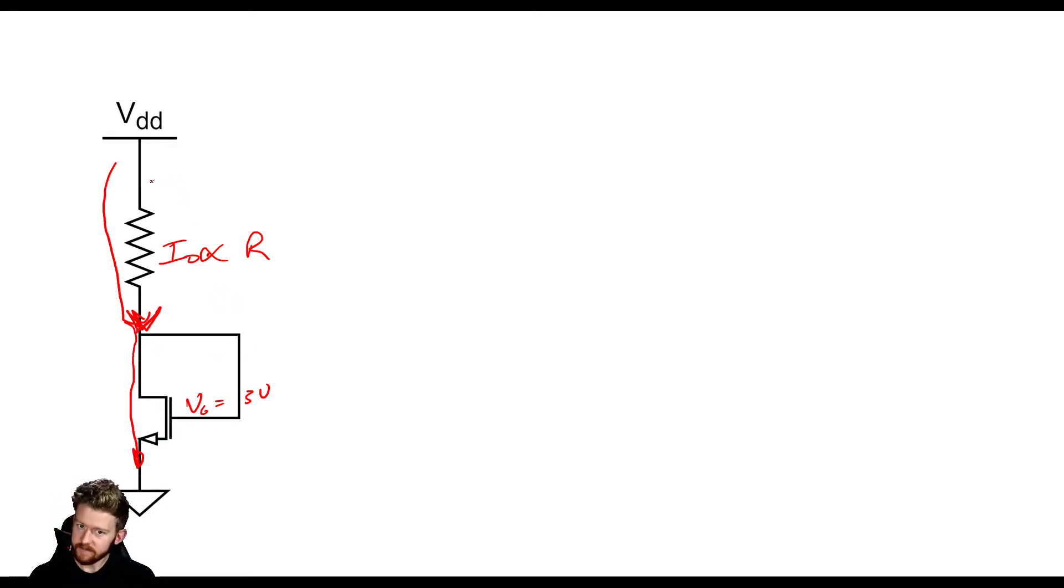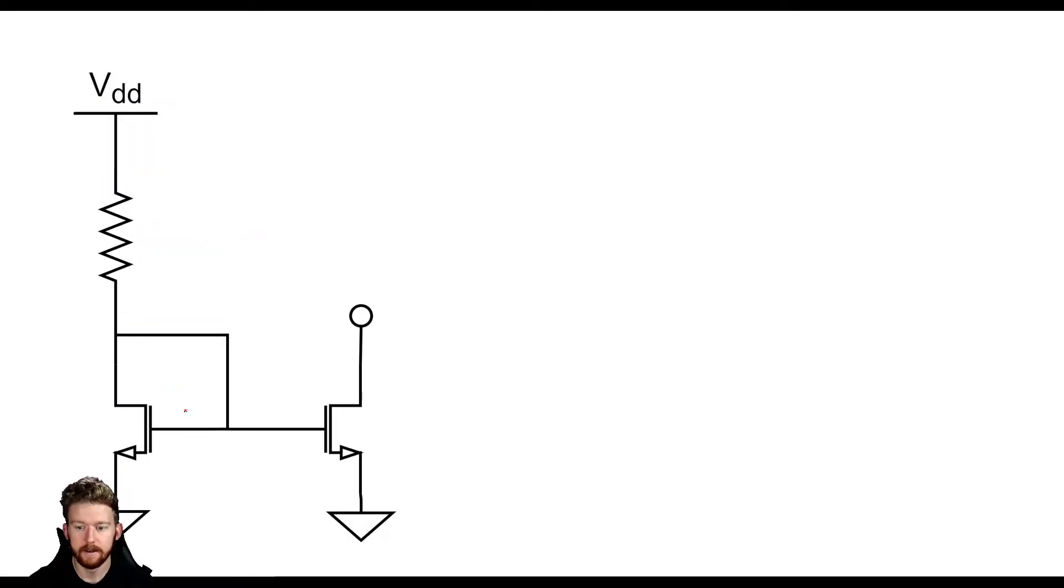Now the only issue is that we have this connected to VDD. Okay and if we want to get this current out we need to have our load connected somewhere in here but then we don't have our VDD connected to the top anymore so we need to have a way of mirroring this reference current out. And the way that we can do that is using this circuit.